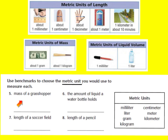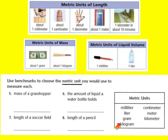Now I want you to look at questions five, six, seven, and eight. The mass of a grasshopper — which of these two would you use to measure its mass? Number six, the amount of liquid a water bottle holds — would you use milliliters or liters? Next, the length of a soccer field — what would you use for length? And last, the length of a pencil — what would you use to measure it? Go ahead and pause the video and try it on your own.